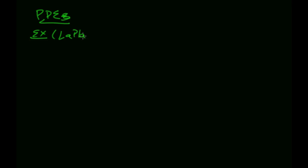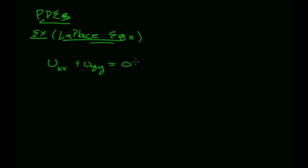This one is what's called the Laplace equation. The partial differential equation is: the second derivative of u with respect to x plus the second derivative of u with respect to y equals 0. Now this equation has multiple solutions. One of these solutions happens to be u(x, y) = e to the x times sine y. We're going to show that this actually solves this PDE.